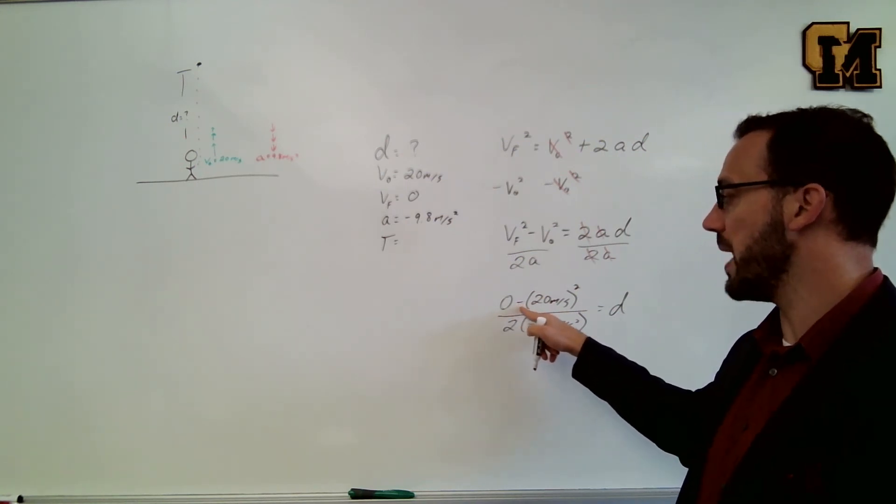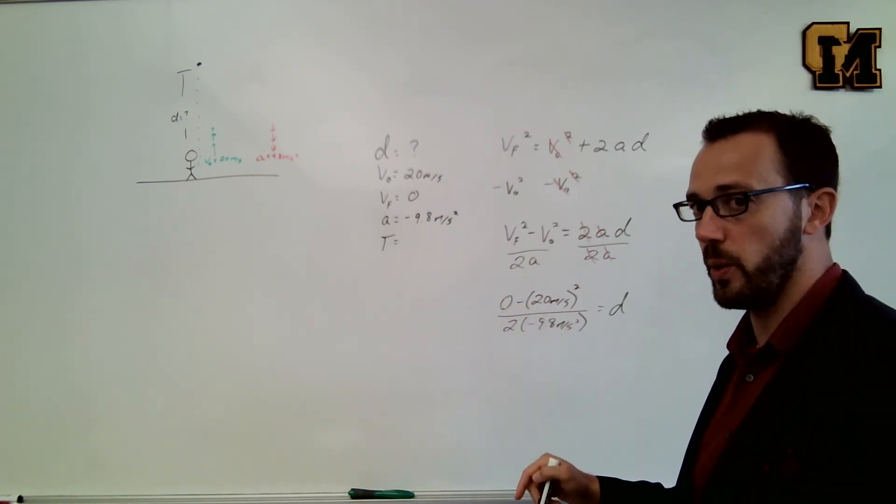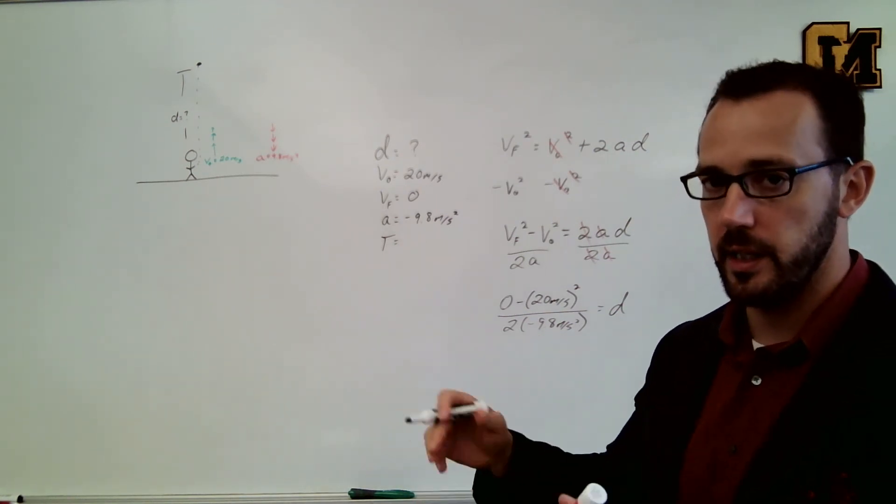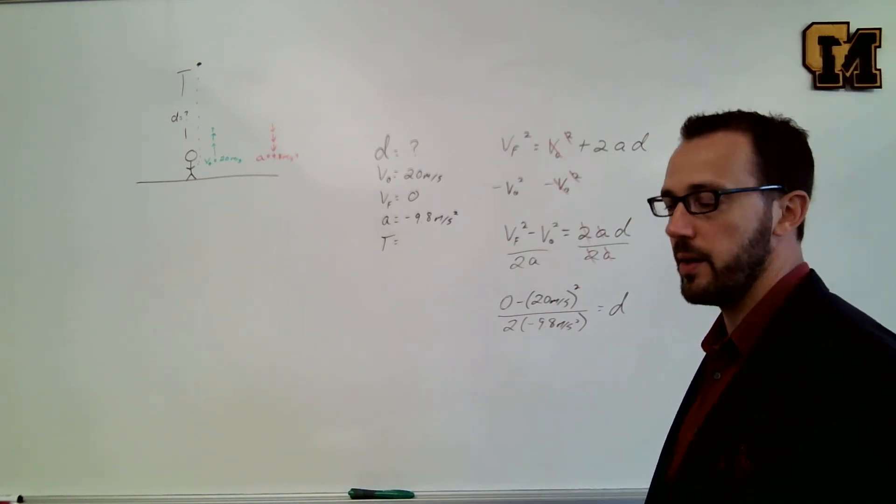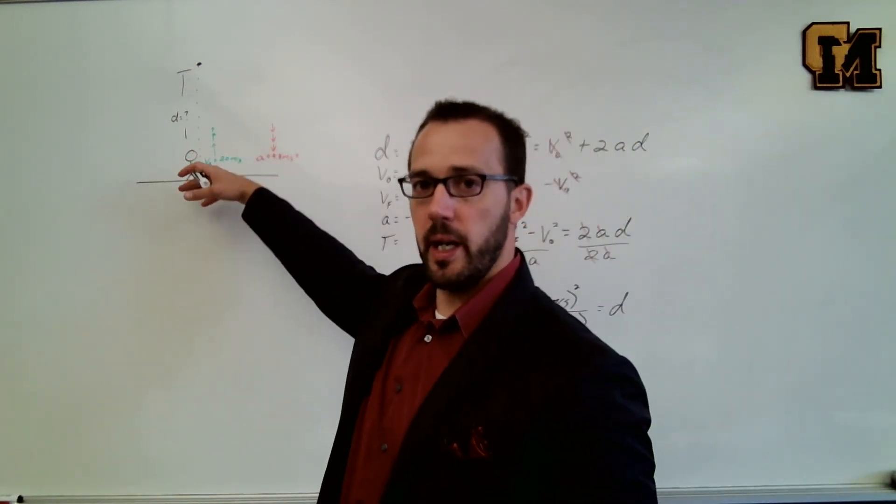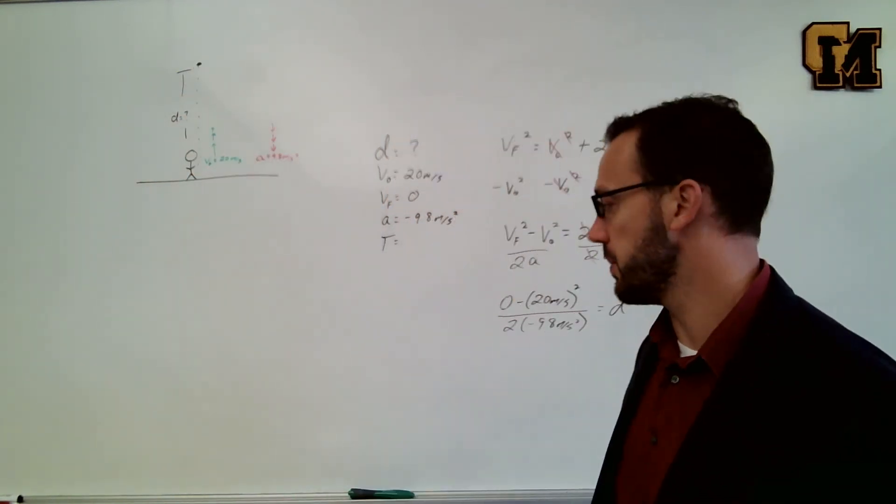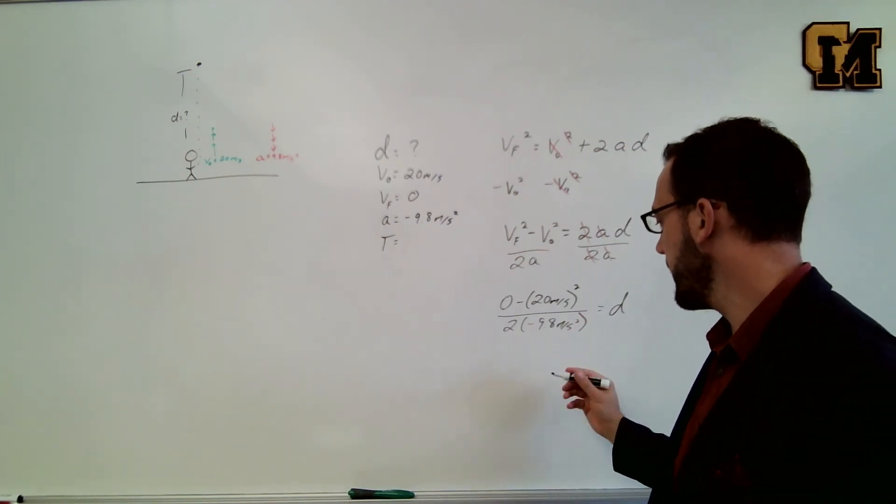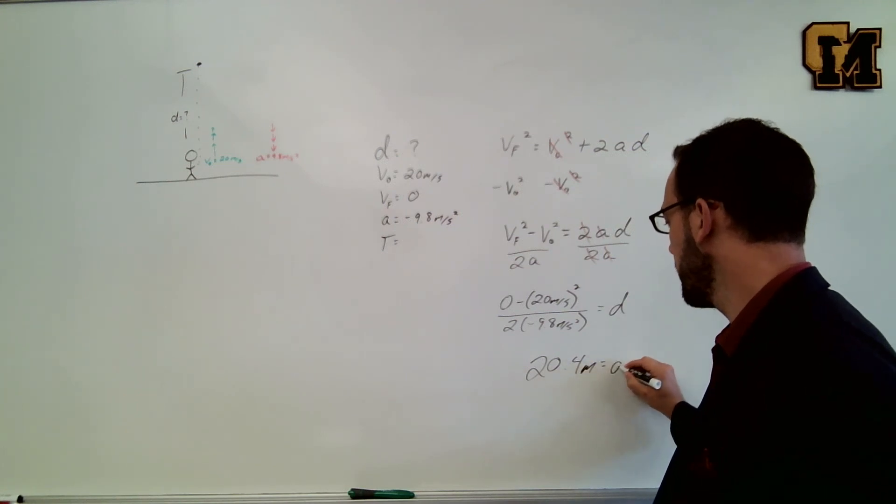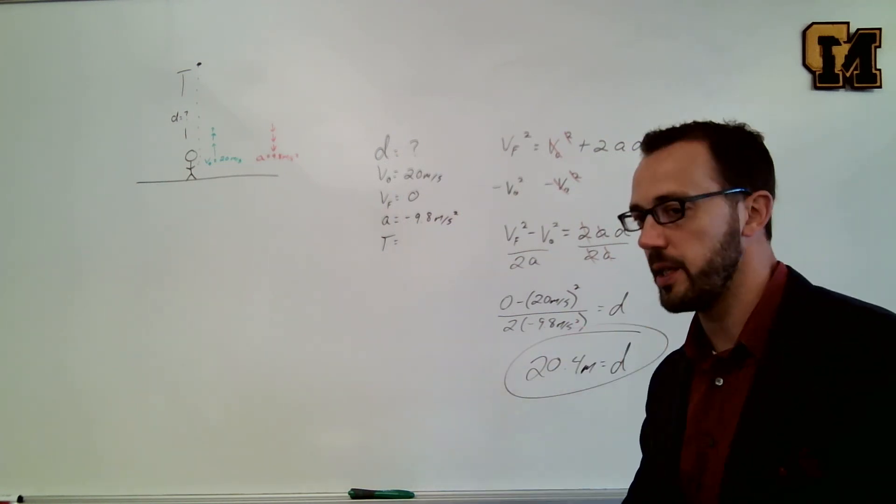They're both negative because I have 0 minus the 20 squared and 2 times negative 9.8, and the negative in the top and the negative in the bottom will cancel out giving me a positive number which makes sense because I'm throwing it upward and upward is a positive number. If I plug all that into my calculator, I should find a positive height of 20.4 meters for how high I throw the object.